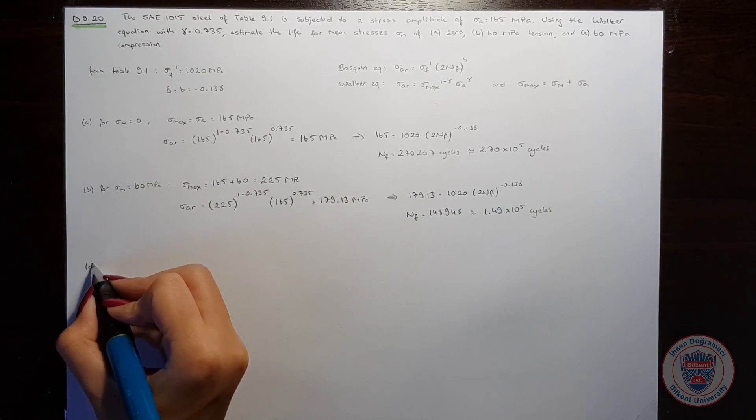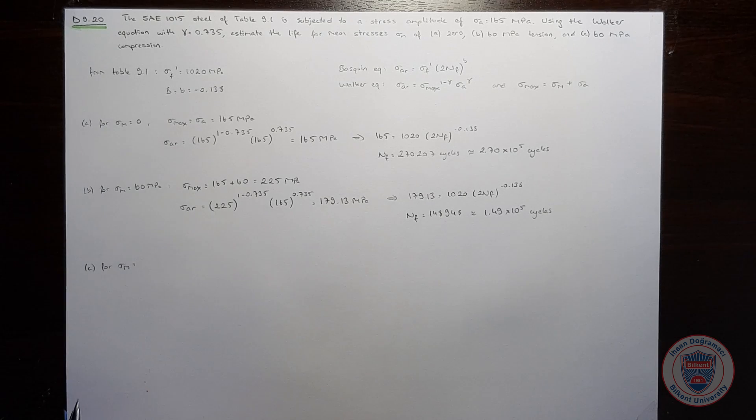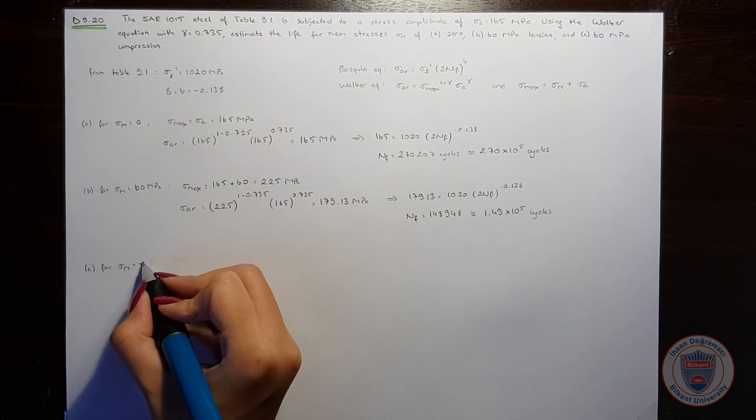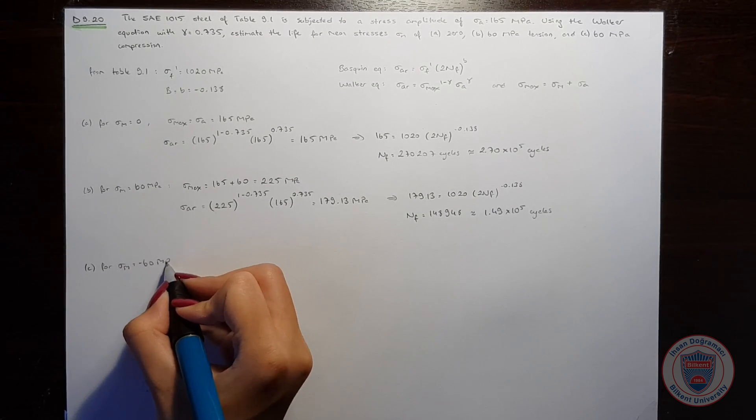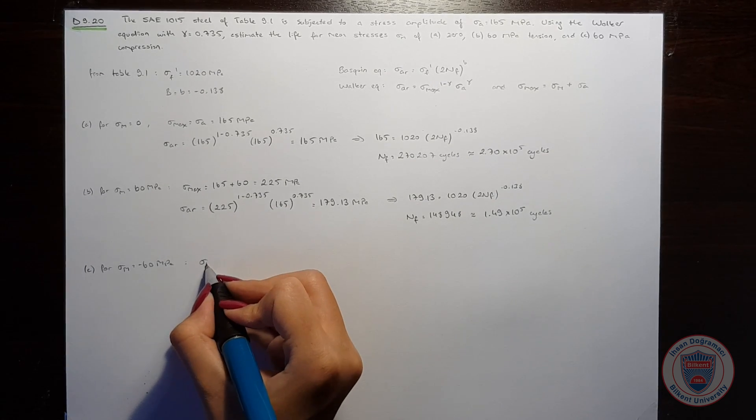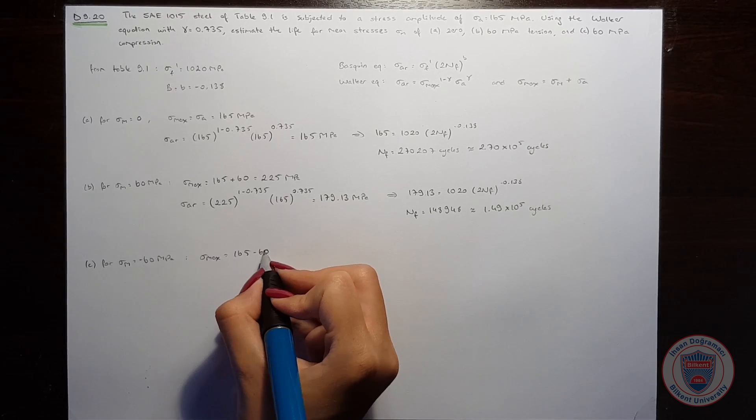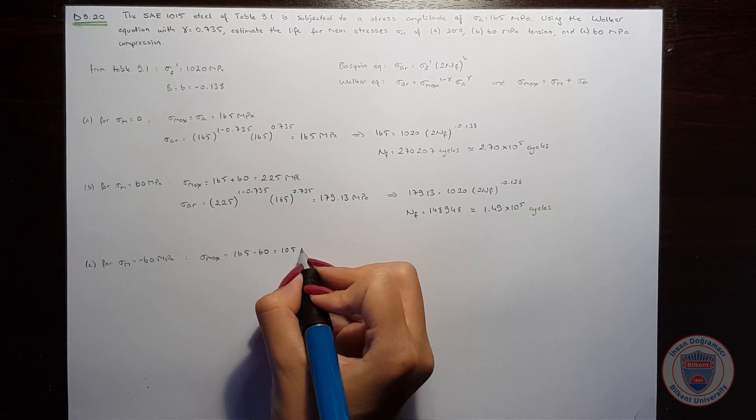Finally, in part C, we consider sigma M equal to minus 60 MPa for compression. Sigma max equals 165 minus 60, which is 105 MPa.